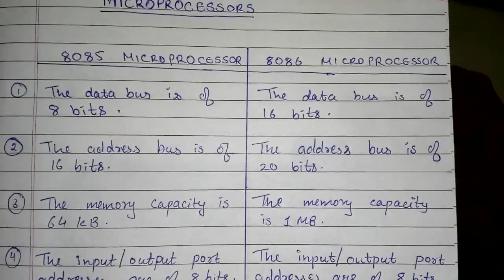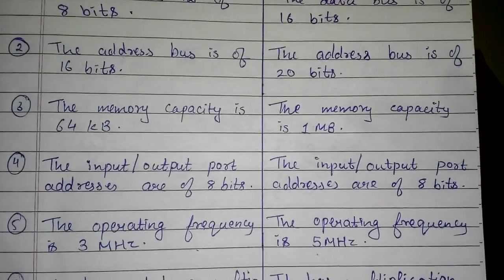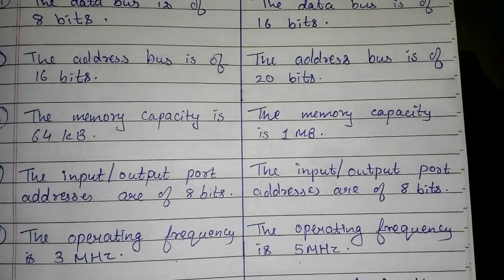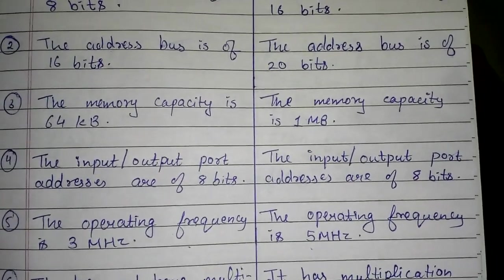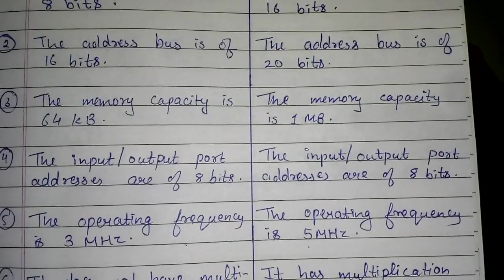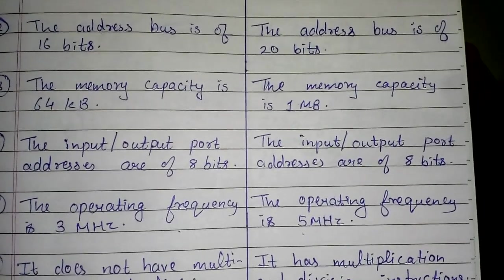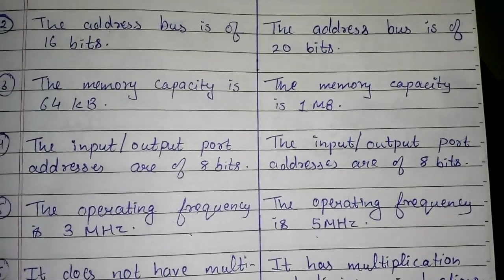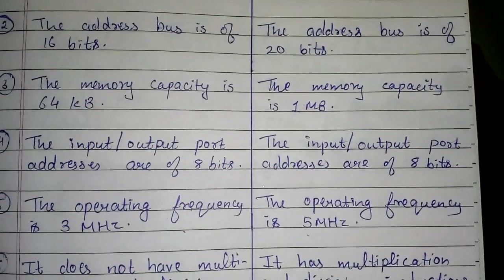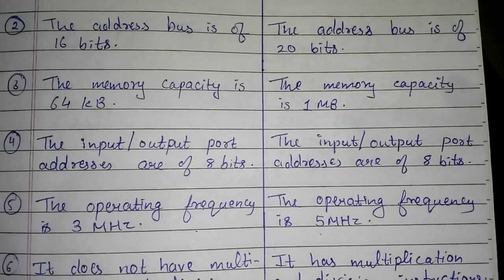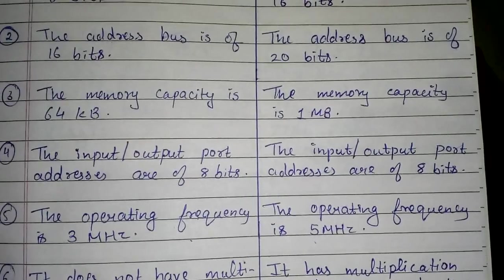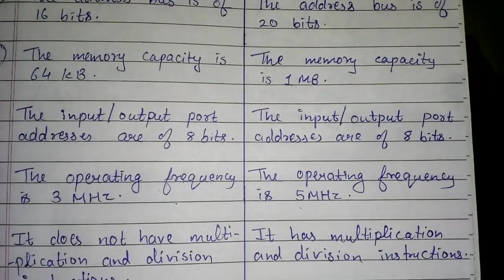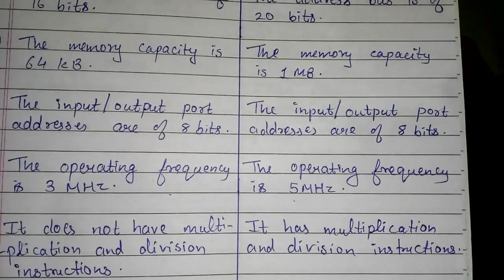Regarding memory capacity — 64 KB and 1 MB may seem small since even phones have at least 16 GB today. However, these microprocessors are used in television remotes, calculators, and AC remotes. They do not need to store games or large images; they just need to store instructions for changing channels or adjusting temperature. Those instructions are only bytes long — 20, 40, or 80 bytes — which is more than enough. We will study these processors in more detail in further videos.